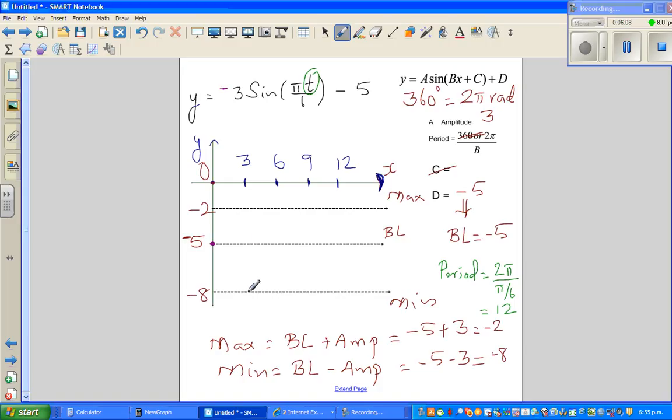Then it comes back to the baseline, then reaches the maximum after 9 minutes, and reaches the baseline. So this is one full cycle. Every 12 minutes, this equation repeats itself. So the sine graph would look like this. This is the graph of this equation.